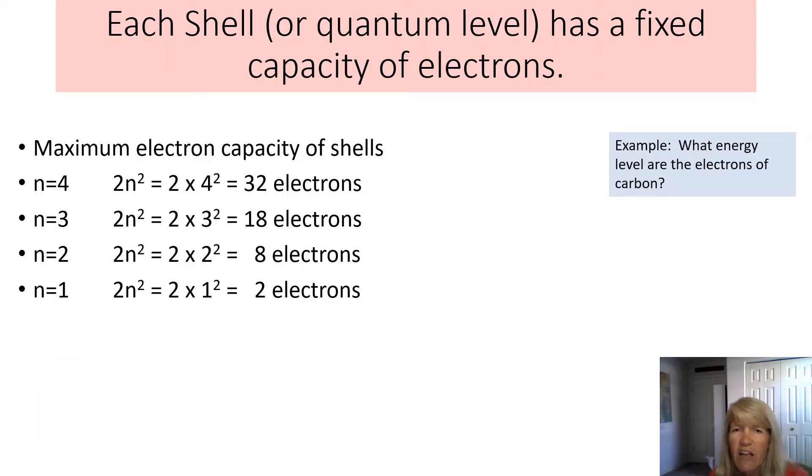So each shell, or what we'll call it as a quantum level, has a fixed capacity. And this chart here shows you that it's 2n squared. So the first level holds two electrons. The second level holds eight. And it's getting too many to draw. But the third level will hold 18. And the fourth level will hold 32. And there's some good charts on this in your book that you can look at.